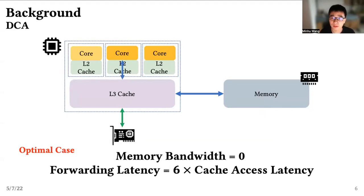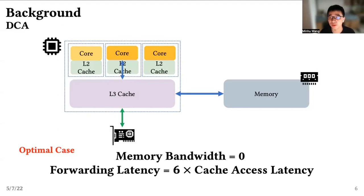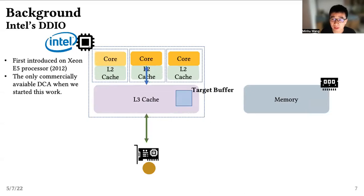So, researchers and processor vendors have developed the idea of direct cache access, which allows NIC to bypass the memory and read or write data directly in the fast processor cache. In the optimal case, if we complete all operations in the cache, forwarding packets generate zero memory traffic, and forwarding latency is reduced from the scale of memory accesses to that of cache accesses. Intel was the only vendor that provided such optimization in its commercial products when we started this work. Intel called this feature Data Direct I/O, or DDIO.